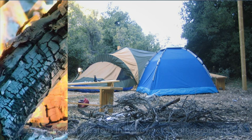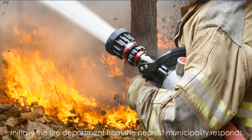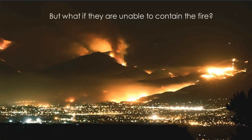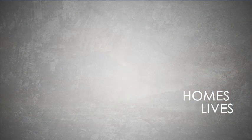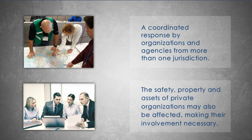Consider the following scenario. A small forest fire starts in a provincial campground. Initially, the fire department from the nearest municipality responds. But what if they are unable to contain the fire and it spreads across a municipal boundary, or even across provincial borders, and threatens homes and lives? That type of incident escalation would call for a coordinated response by organizations and agencies from more than one jurisdiction. Municipal, provincial, and perhaps even federal agencies, in extreme cases, would need to work together to bring the situation under control. The safety, property, and assets of private organizations may also be affected, making their involvement necessary.